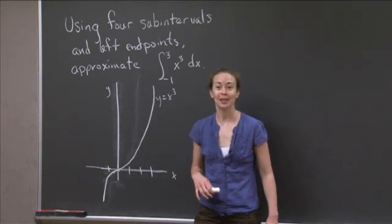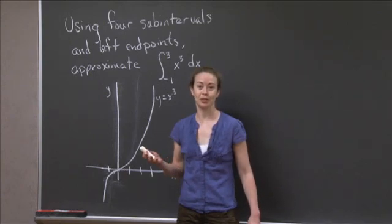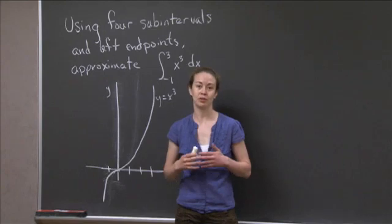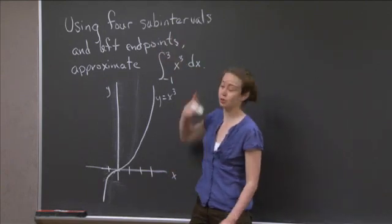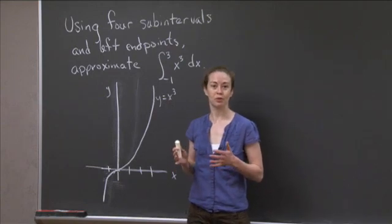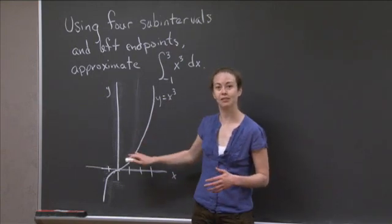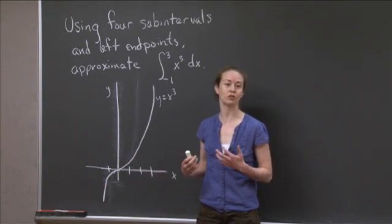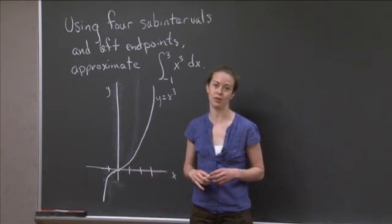OK, welcome back. So what we want to do again is use Riemann sums to approximate this definite integral. And I've given you the specifications of four subintervals and left endpoints. So I'm going to draw what these four subintervals and their left endpoints are going to give us on the graph. Then we're going to calculate what the actual value is of this estimate, and then I'll show you a way you can write it in some different notation.